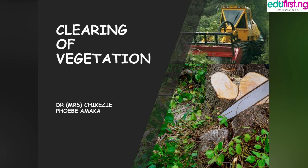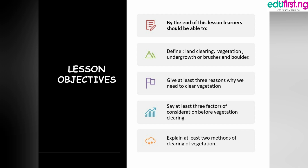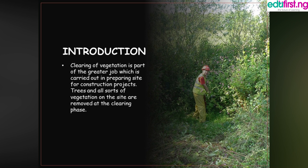Hello listeners, welcome to today's lesson on basic science and technology. We are going to talk about clearing of vegetation. My name is Dr. Mishichike Zapa. By the end of this lesson, learners should be able to define land clearing, vegetation, undergrowth or brushes, and boulder, and give at least three reasons why we need to clear vegetation.